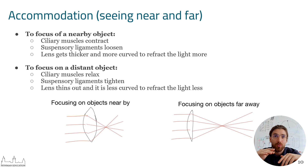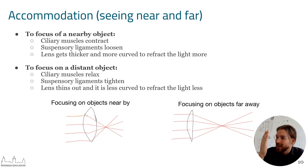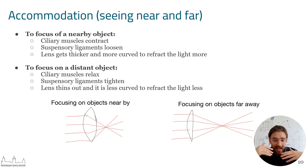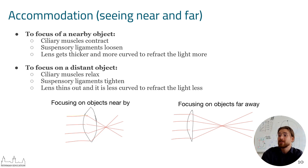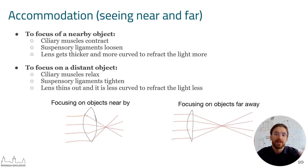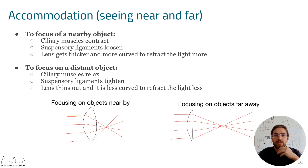This explains why older people hold their phones further away — as you age, your ciliary muscles tire and can't contract as strongly, meaning you can't focus on something close up. You have to move the image further away to a point where the ciliary muscles can move the lens to focus it. For distant objects, the ciliary muscles relax, the lens becomes more narrow, and that pushes the image a bit further into the eye so the retina can make sense of it.